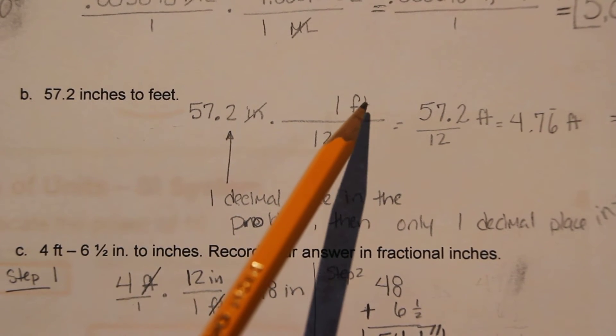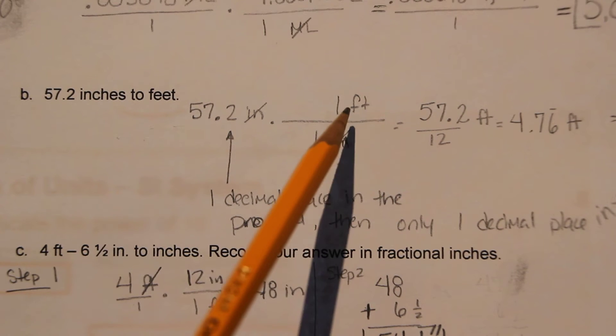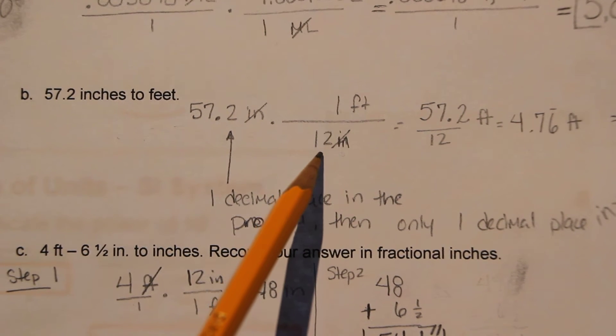So inches is gonna go on the bottom, feet's gonna go on the top. This is our conversion factor. One foot is the same thing as 12 inches.